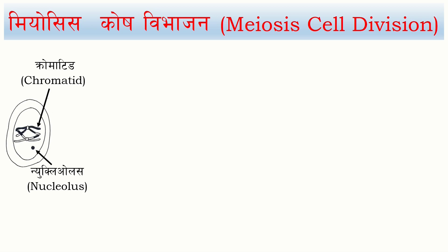The two chromosomes are chromatids. This chromosome is chromatid, and this chromosome is also chromatid. In this case, the chromosomes are called synapsis.